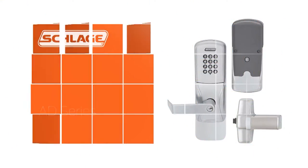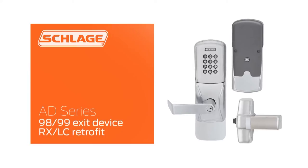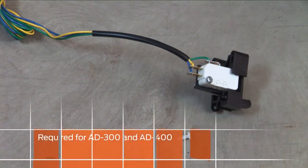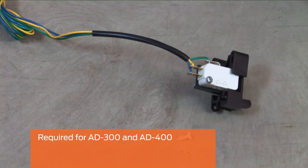This video will show you how to retrofit a Von Dupren 9899 device with an RX-LC switch. This step is necessary when using an AD300 or AD400 series 993 exit trim.